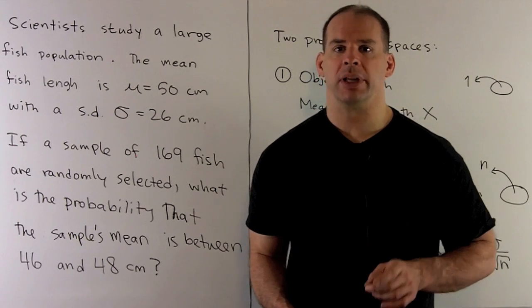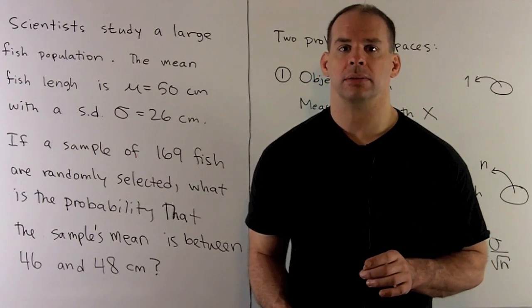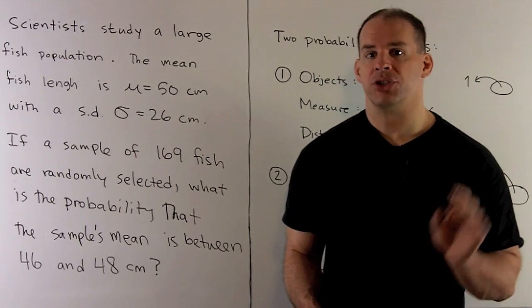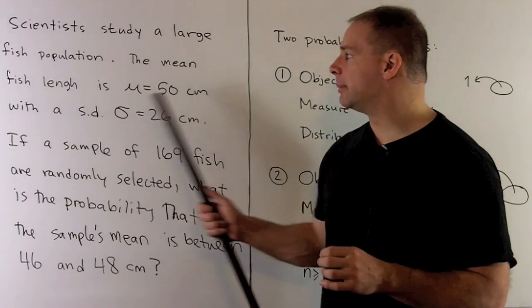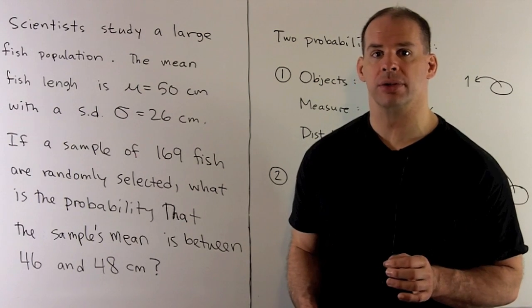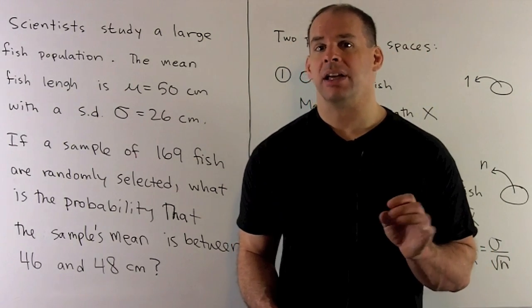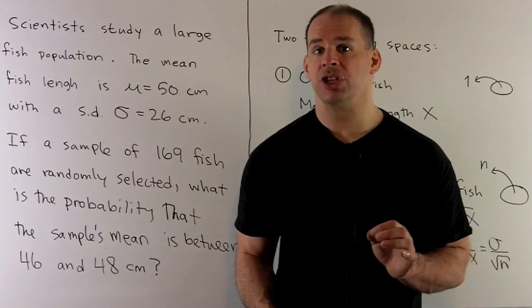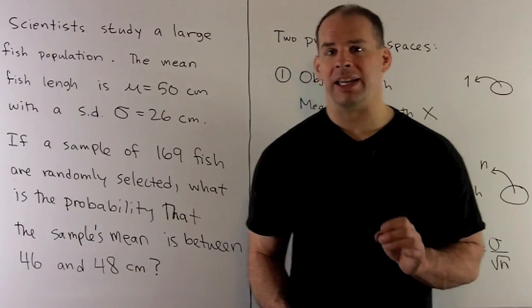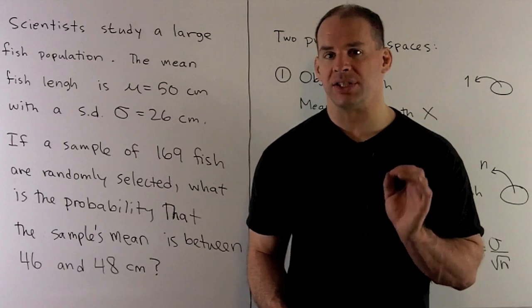We're studying a large fish population. Quantity of interest is going to be fish length. Fish length is distributed with mean equal to 50 centimeters, standard deviation equal to 26 centimeters. If we randomly select a sample of 169 fish, what's the probability that the sample's mean is between 46 and 48 centimeters?